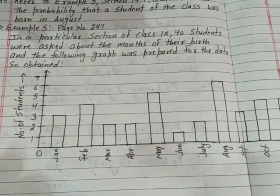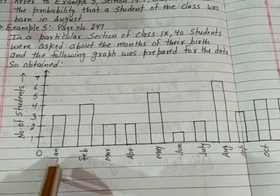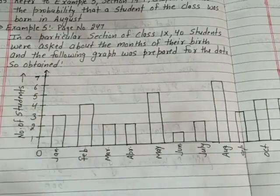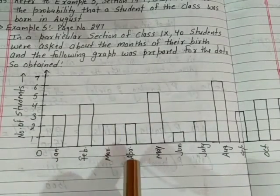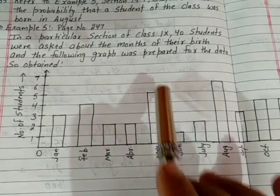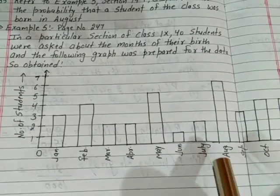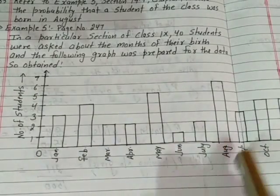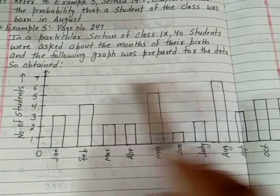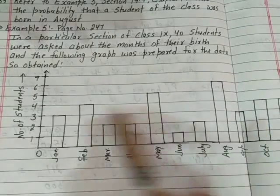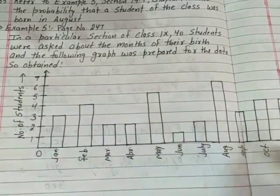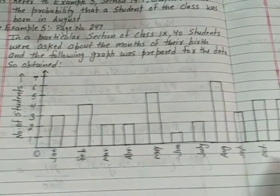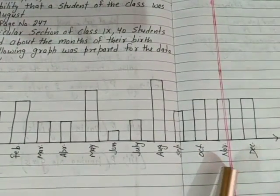From Chapter 14 we got to know: January — 3 students, February — 4 students, March — 2 students, April — 2 students, May — 5 students, June — 1, July — 2, August — 6, September — 3, October — 4, November — 4, December — 4. Look at this — I have made this. Okay?